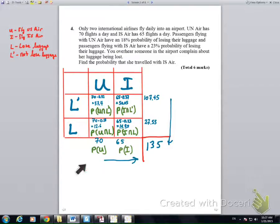And in the outside, we have the probability of flying U.S. Air or U.N. Air and probability of flying IS Air. And that's 65 out of 135. We have 70 out of 135.